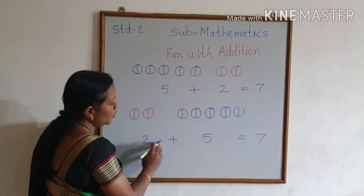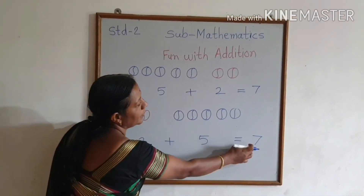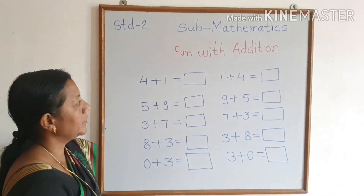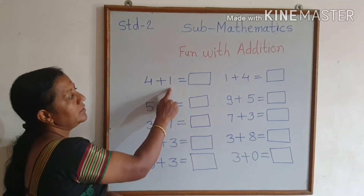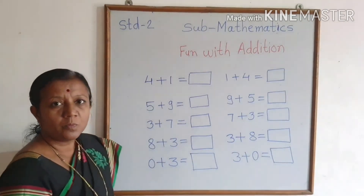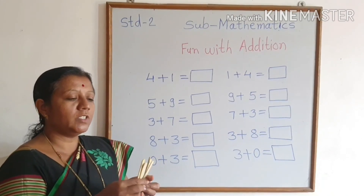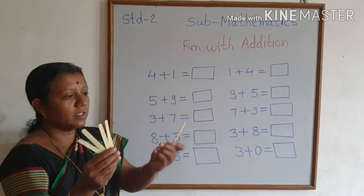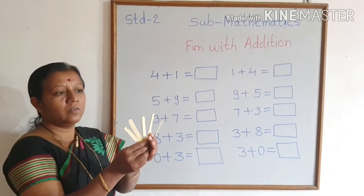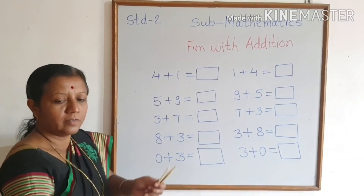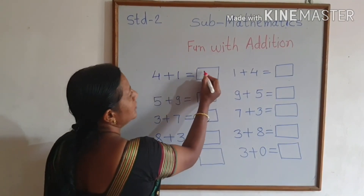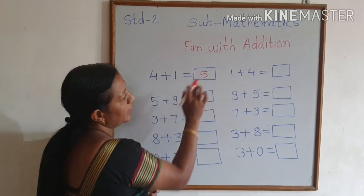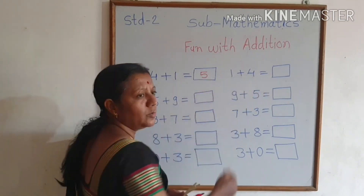5 plus 2 is equal to 5. Now, 4 sticks plus 1 stick — how many little sticks? 5. So 4 plus 1 is equal to 5. Then 1 plus 4 is equal to 5.